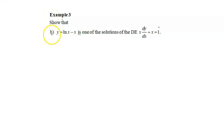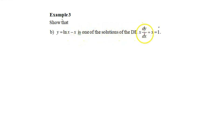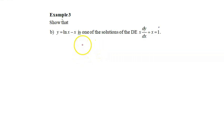Example 3b. Here we have to show that the equation y equals ln x minus x is one of the solutions for the DE x dy over dx plus x equals 1. As we did for Example 3a, we start with the given solution y equals ln x minus x.